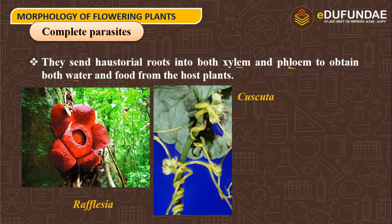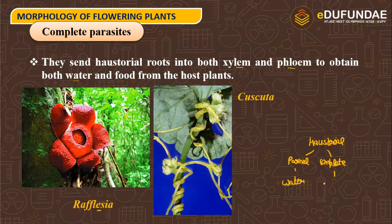Another example of complete parasite is Rafflesia. So in complete parasites, examples are Cuscuta and Rafflesia. In partial parasites, they only obtain water from the host. In complete parasites, they obtain both water and food from the host plant. Example of partial parasite is Viscum or Striga.